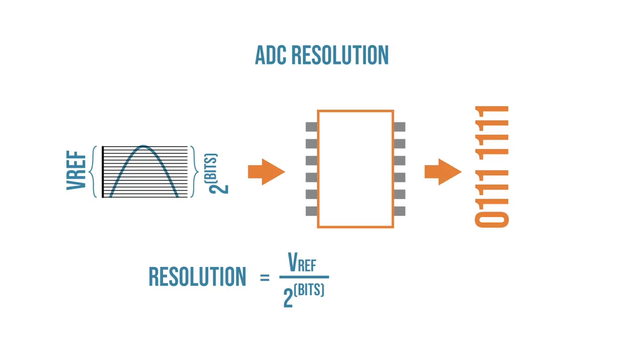For our demonstration, I've breadboarded an 8-bit ADC, so 2 to the power of 8 is equal to 256. Now our resolution becomes 5 divided by 256, which is 0.0195 volts, or 19.5 millivolts. This means that over the range from 0 to 5 volts at our input, each quantized step is the equivalent of 0.0195 volts. This gives our converted digital value a certain weight to each bit.